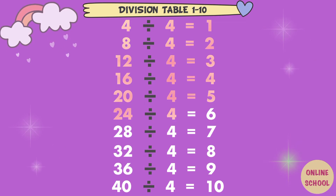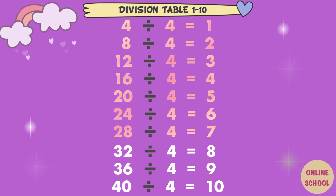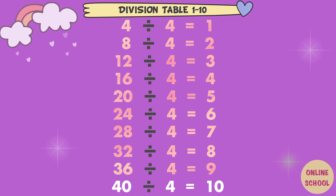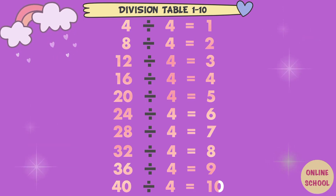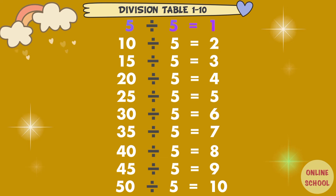24 divided by 4 equals 6. 28 divided by 4 equals 7. 32 divided by 4 equals 8. 36 divided by 4 equals 9. 40 divided by 4 equals 10. Divided by 5. 5 divided by 5 equals 1.